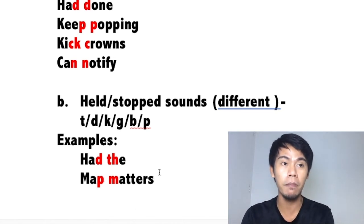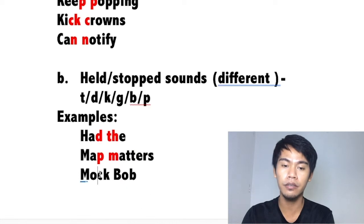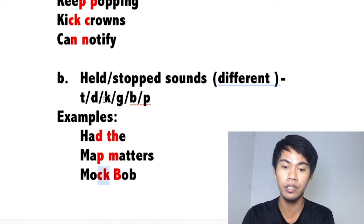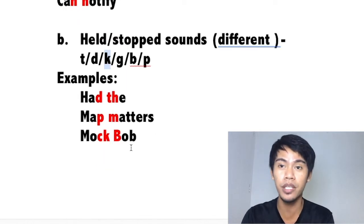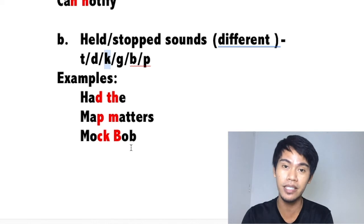Another example: 'mock ball.' Consonant, consonant — do they have the same sound? No. The first sound of 'ball' is B. Is B in the held-sound list? Yes. So can we do the held sound? Yes. We say 'mock ball.' You're not going to say 'mock ball' with separate sounds — just do the held sound and say 'mock ball.'